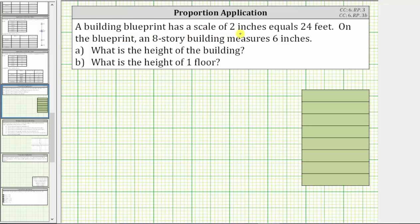A building blueprint has a scale of two inches equals 24 feet. On the blueprint, an eight-story building measures six inches. A, what is the height of the building? B, what is the height of one floor?